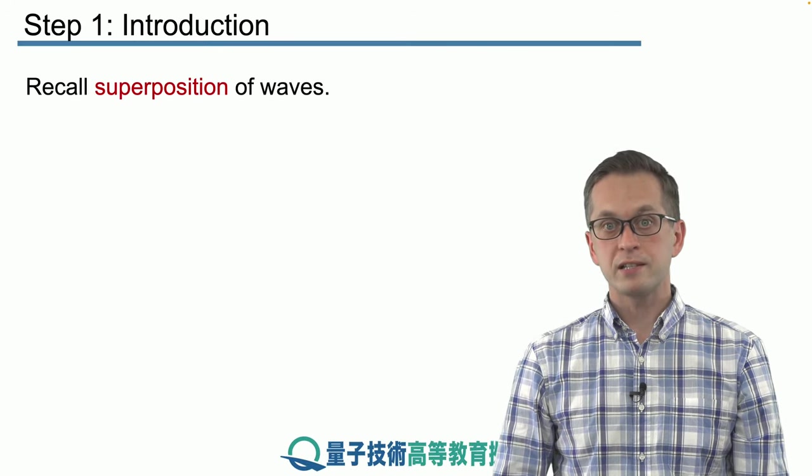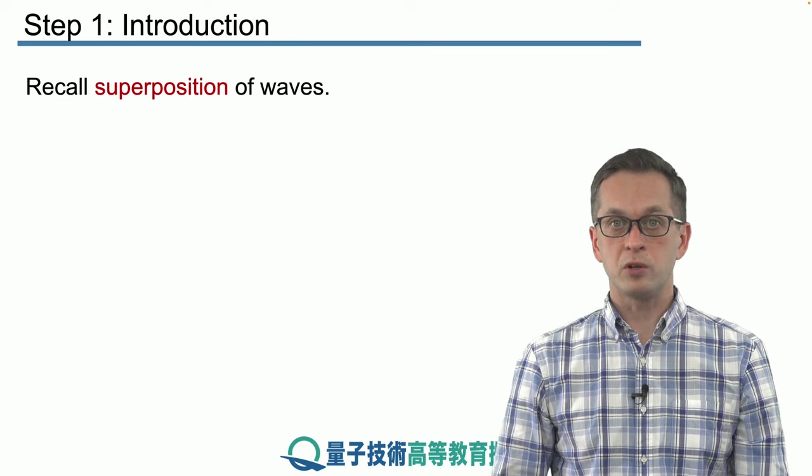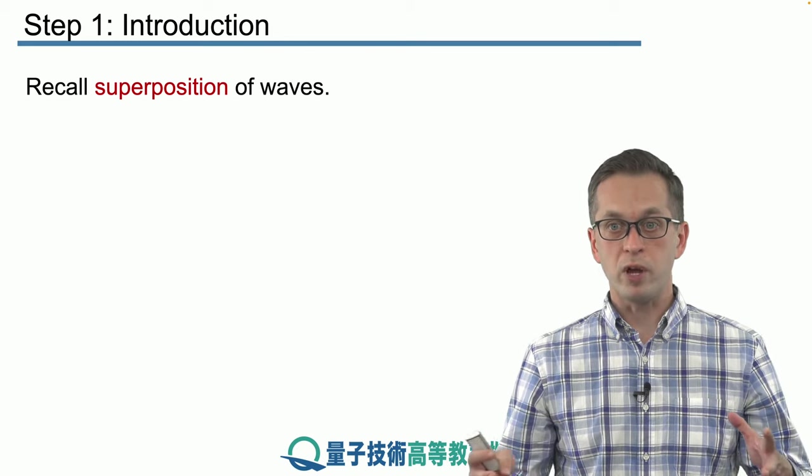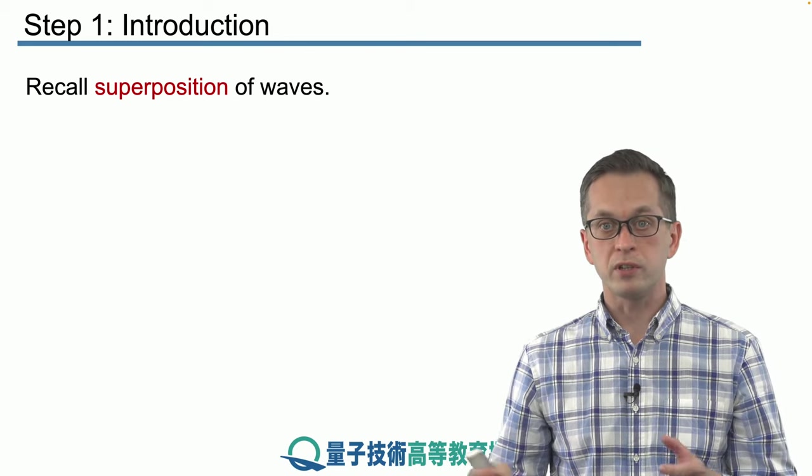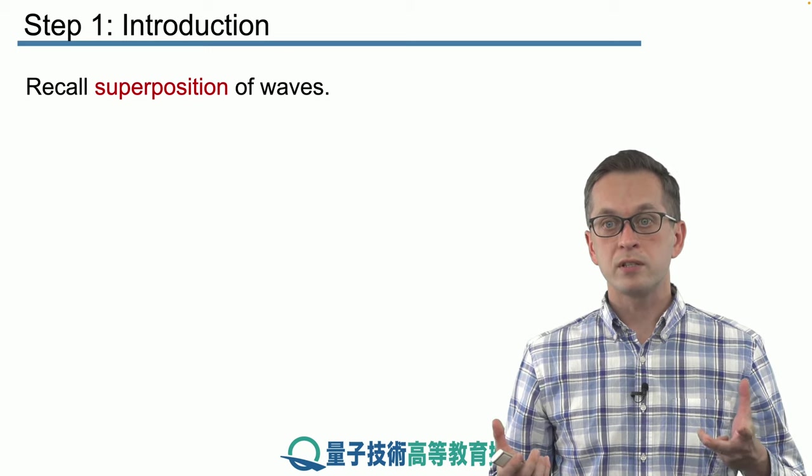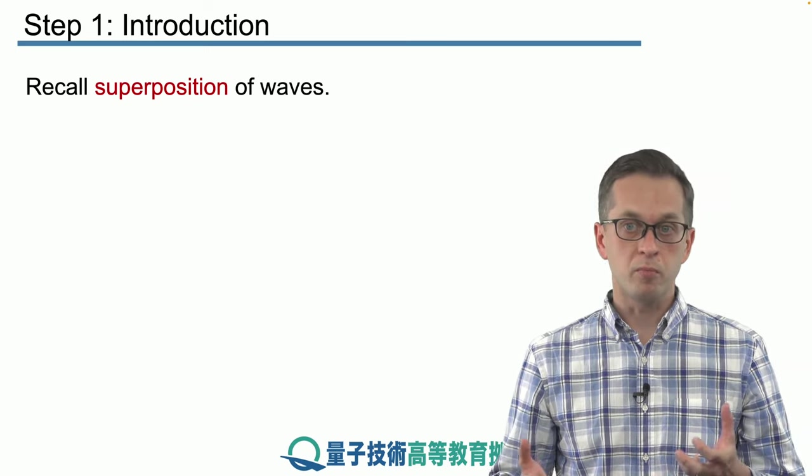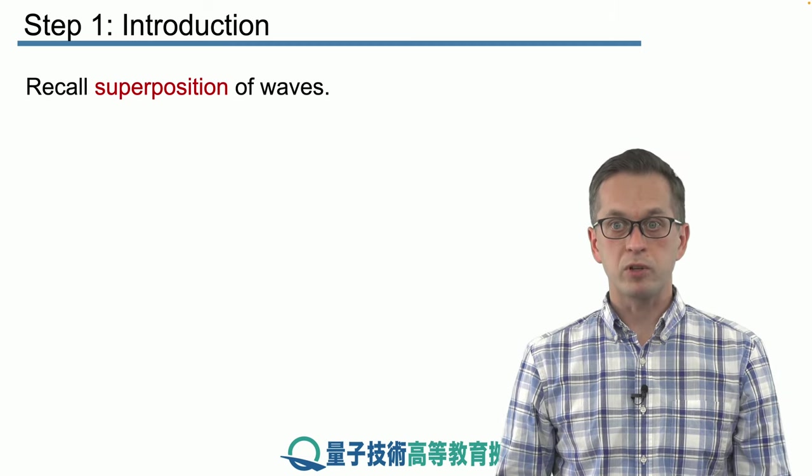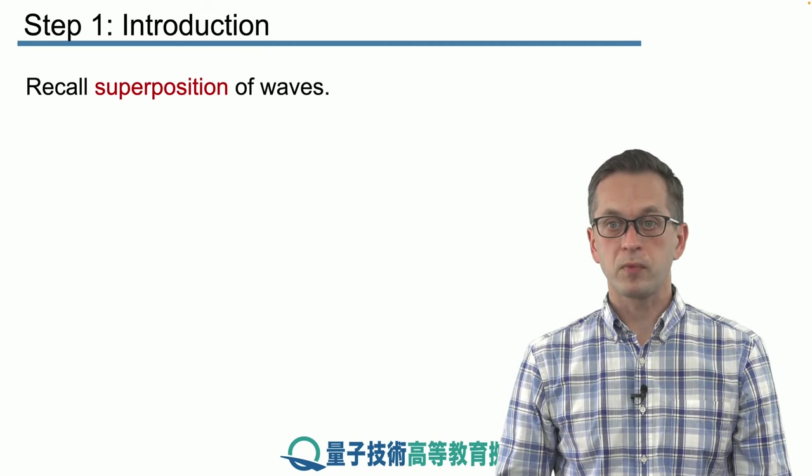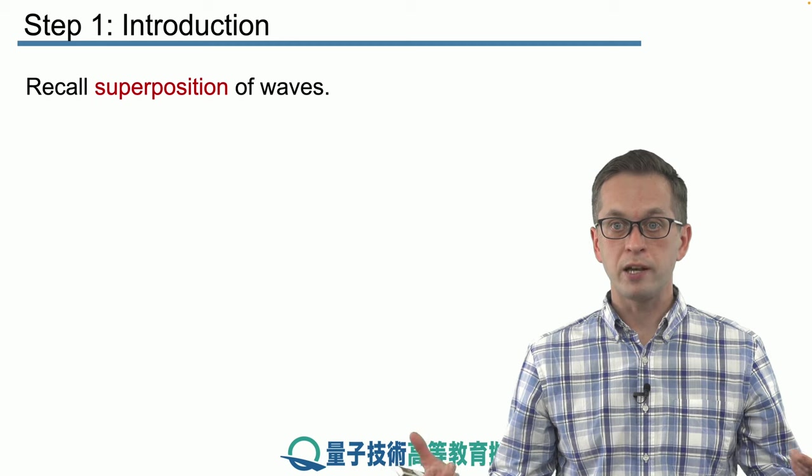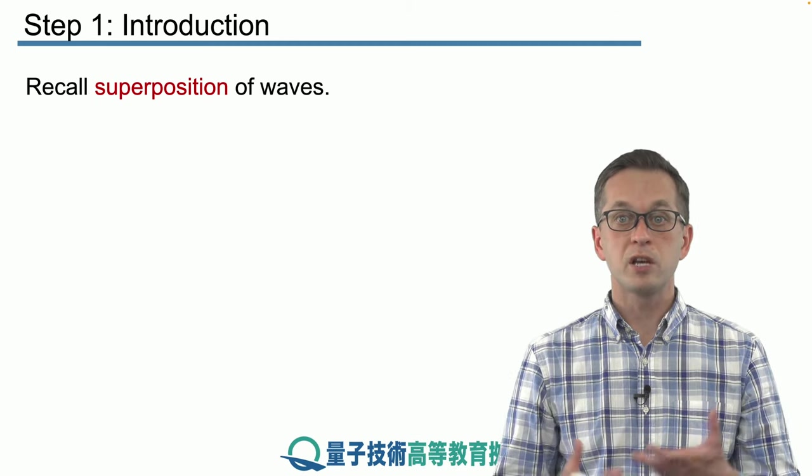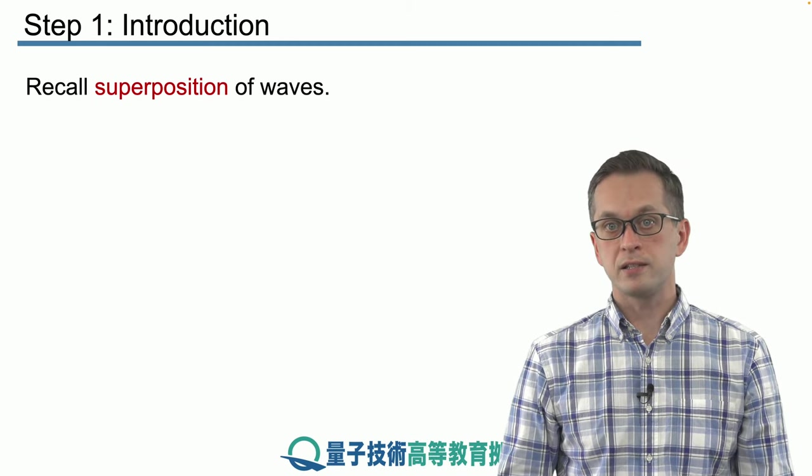In the previous lessons we have seen many examples of superposition of waves. We were given some wave components or waves of different types and then we asked what is the resulting wave if we add the two waves together or many waves together. One example was the standing wave when we had two identical waves traveling in opposite directions producing a nice standing wave.